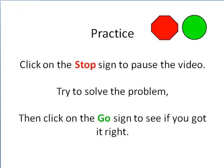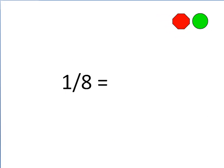Now we're going to do a little practice. So what you're going to do is I'm going to show you a problem. You click on the stop sign. You try to solve it yourself. You click on the green sign or the go sign to see if you got the answer right. 1 eighth. Click on the stop sign. 3 eighths. Click on the stop sign.